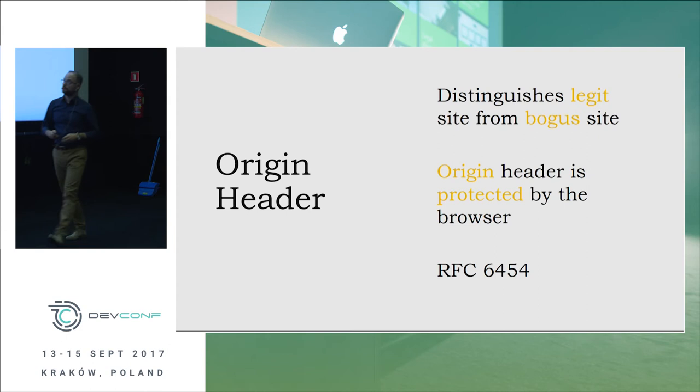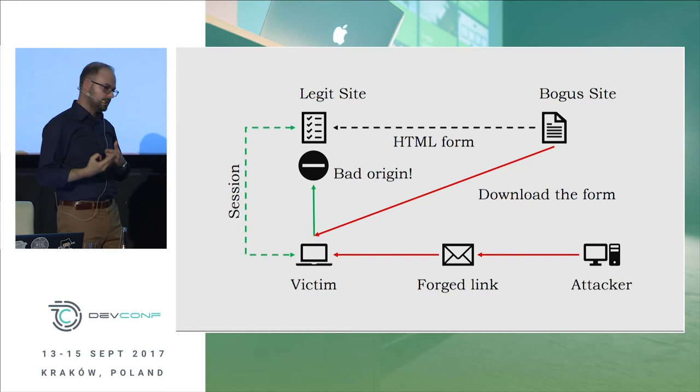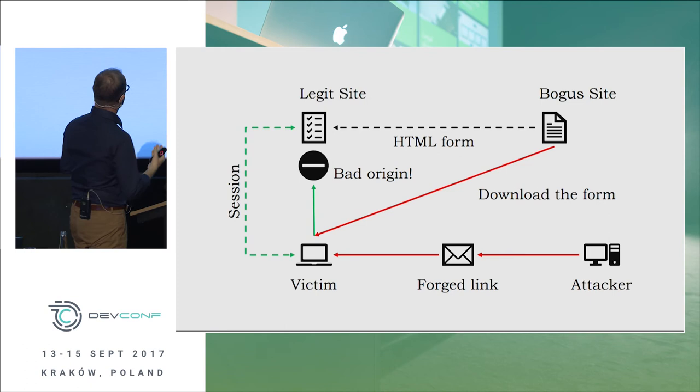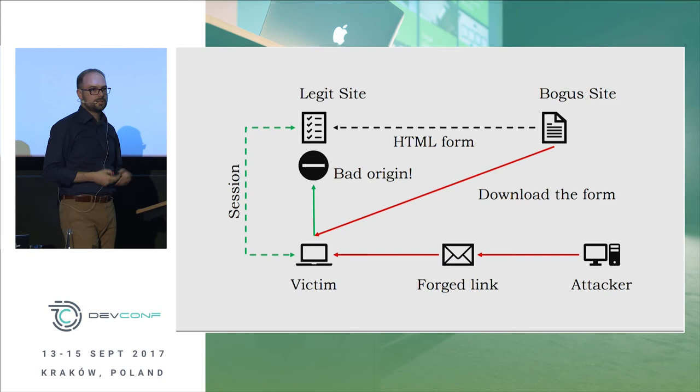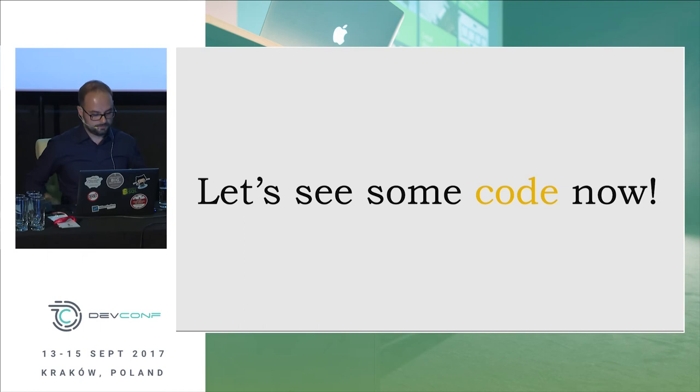Back in our attack scenario, the arrow from the victim's browser to the legitimate site is now green — the request is still authenticated and contains the authentication cookie — but we stop it on the server side. The server can check that the origin of the form is from the bogus site, not the legitimate site.